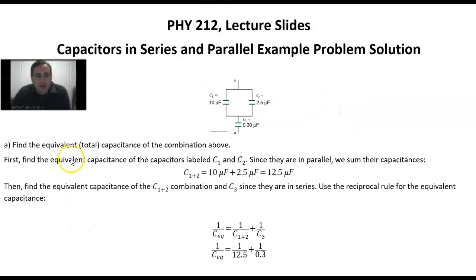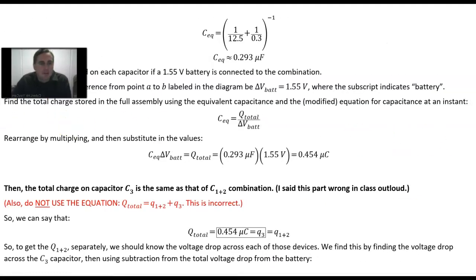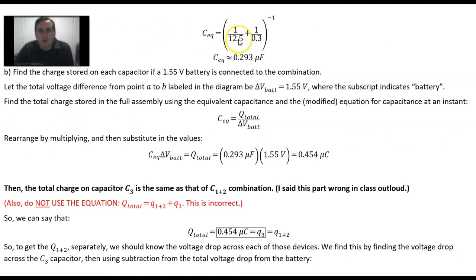As a result, we should add them using the reciprocal rule. So 1 over the equivalent capacitance is 1 over C1,2 plus 1 over C3. What we find is 1 over 12.5 plus 1 over 0.3 reciprocated in our calculator is approximately 0.293 microfarads. This solves part A.